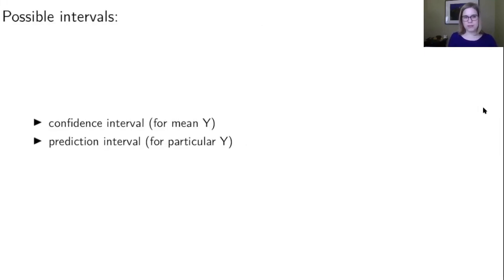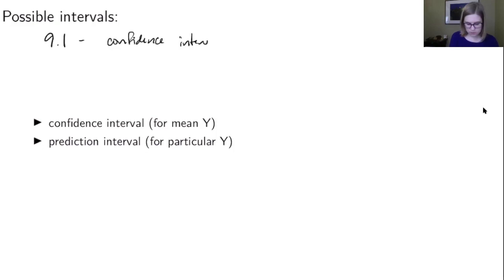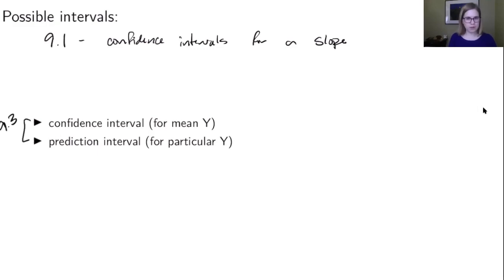We have two possible intervals — and this is another place where statisticians should not be allowed to name things. In section 9.1, we had confidence intervals for a slope. Now in 9.3, we have two different things: one is also called a confidence interval, but it's a confidence interval for a mean y, and then we have a prediction interval for a particular y. So this gives us three different confidence intervals to think about for this course.